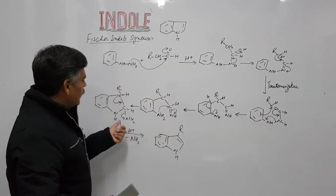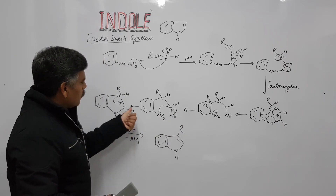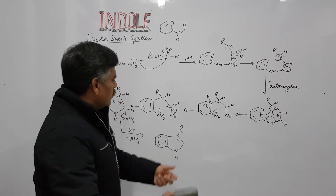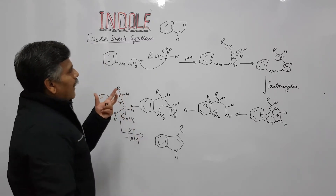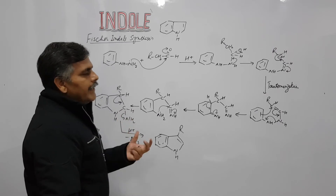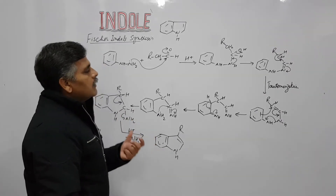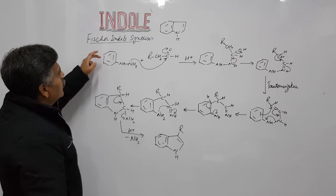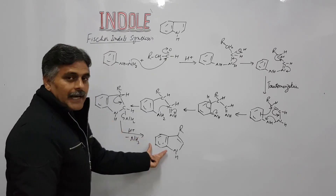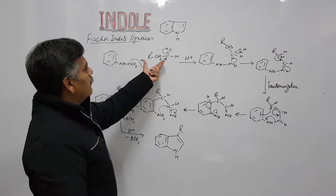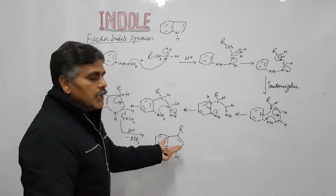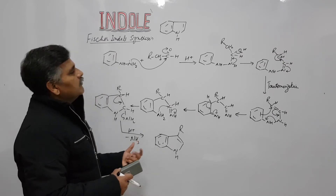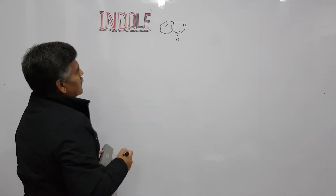Fischer indole synthesis has wide application in the preparation of a large number of substituted indole derivatives. If the benzene ring of phenylhydrazine is substituted, the substitution appears on the phenyl ring of indole. When you use substituted carbonyl compounds, positions two and three of indole are also substituted. Therefore, substituted indole derivatives are easily accessible by following Fischer indole synthesis.